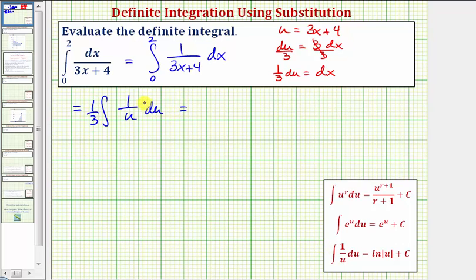And now it fits the integration formula perfectly. So we'll find the antiderivative, which would be one third times natural log absolute value of u, or in our case, natural log absolute value of three x plus four. Now that we have our antiderivative in terms of x, we'll include our limits of integration again, which are from zero to two.